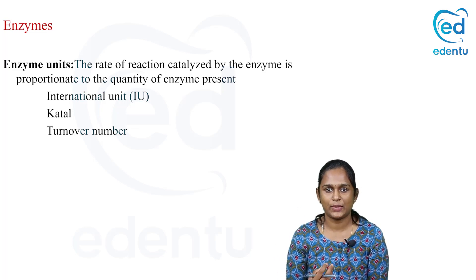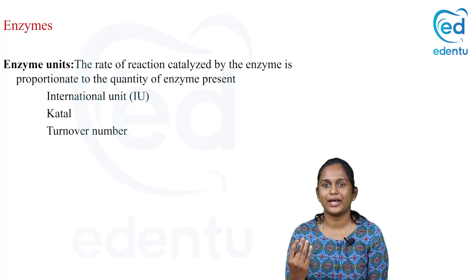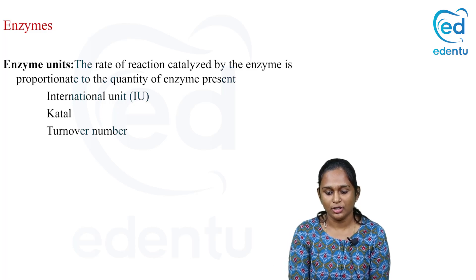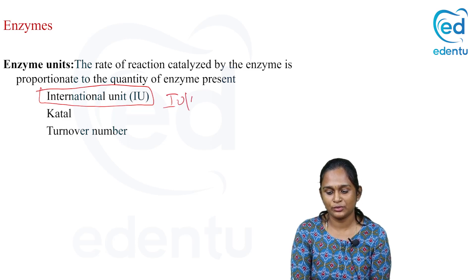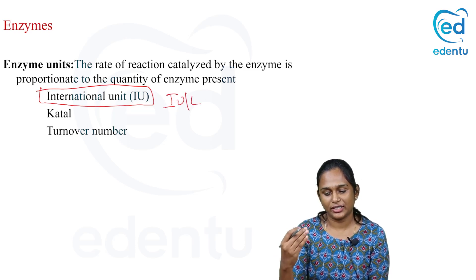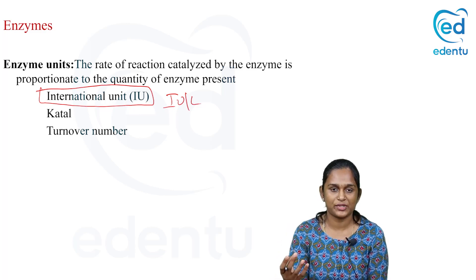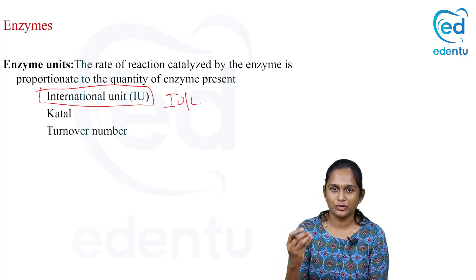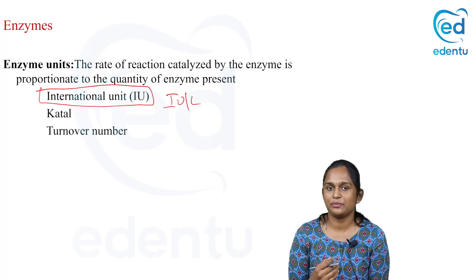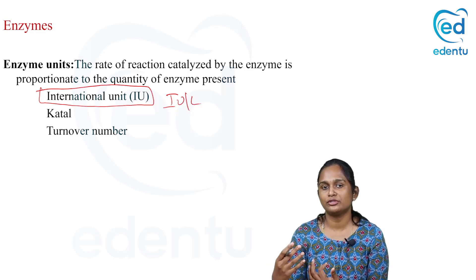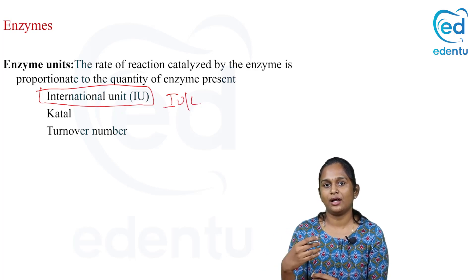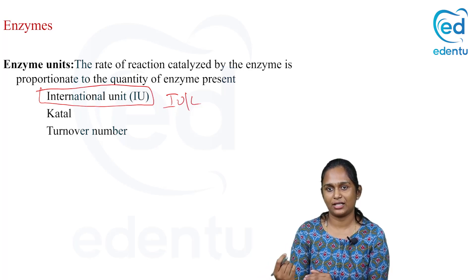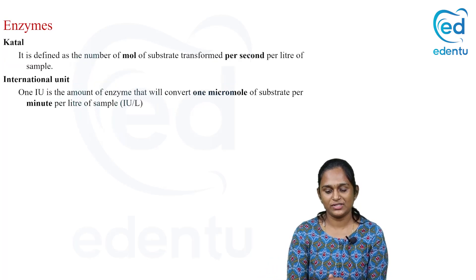How can we express the enzyme? What are the units? Enzyme activity can be expressed in three forms: katal, international units, and turnover number. The most commonly used unit is international units per liter. The rate of the reaction catalyzed by the enzyme is expressed in these units, assuming it is proportional to the quantity of enzyme present.